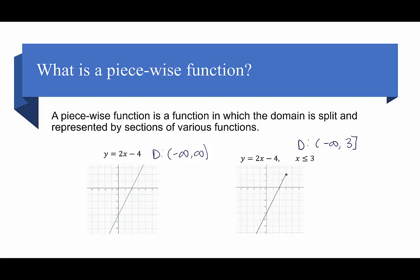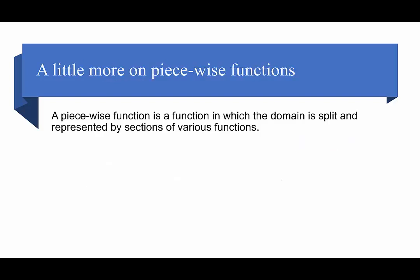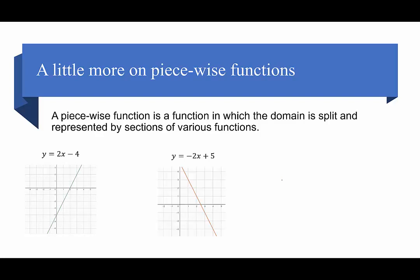With a piecewise function, we normally look at more than just one piece. Here's our y equals 2x minus 4 again, and then here's another equation: y equals negative 2x plus 5. For our piecewise function, we're going to split up the domain. The first piece goes from negative infinity to positive 3. The second piece — for y equals negative 2x plus 5 — goes from 3 to infinity.